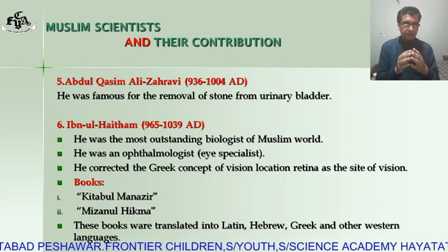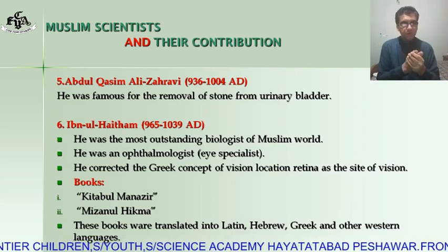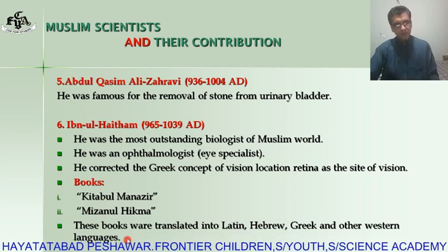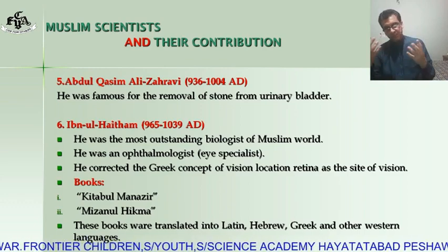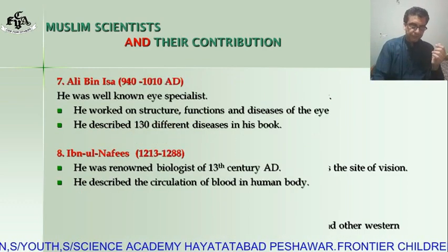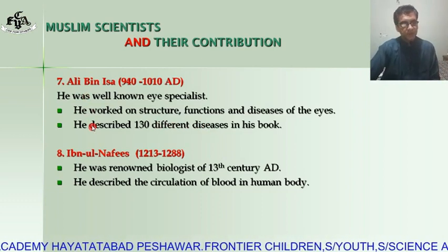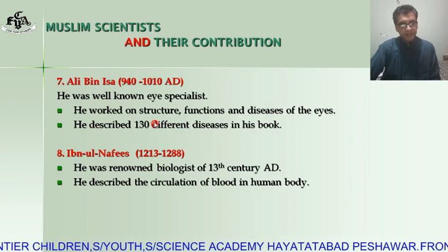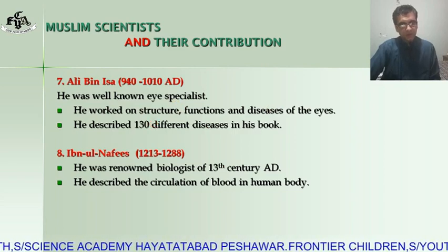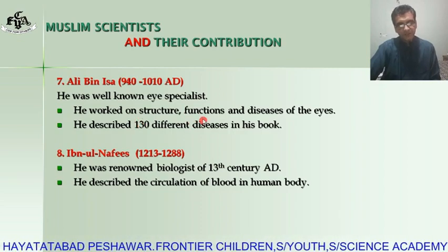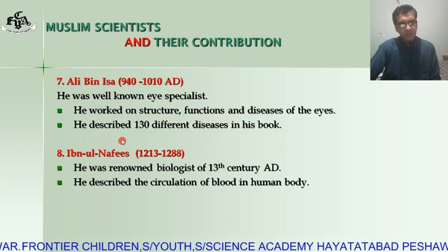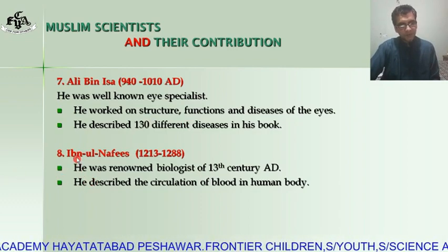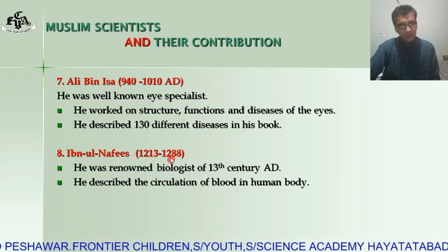Ibn al-Haytham had two books that were translated into different European and Western languages, including Greek and Latin. The next Muslim scientist, Ali bin Isa, 940 to 1010 AD, was also a well-known eye specialist. He worked on the structure, function, and diseases of the human eye, describing almost 130 different diseases in his book.